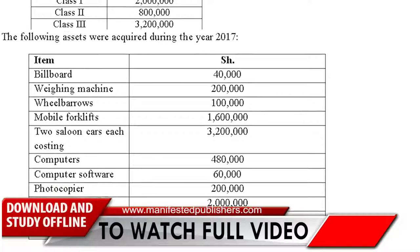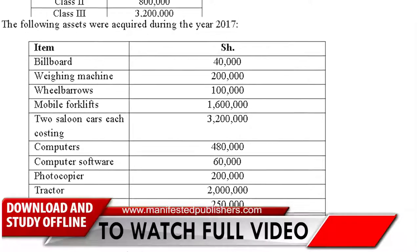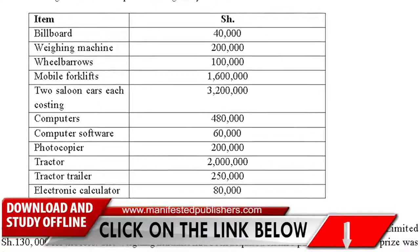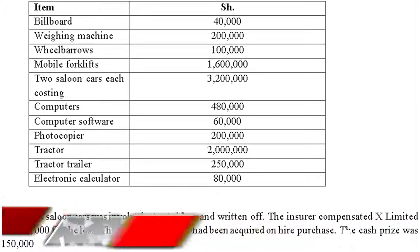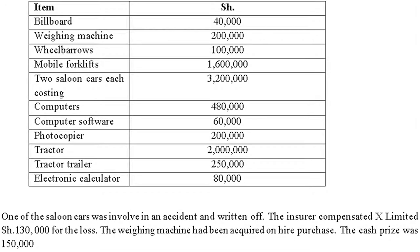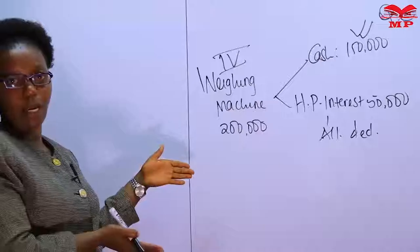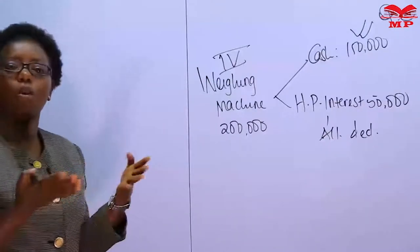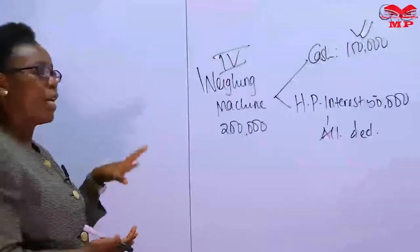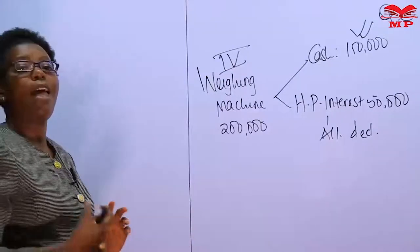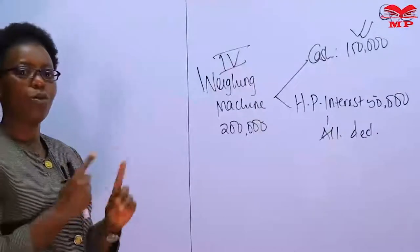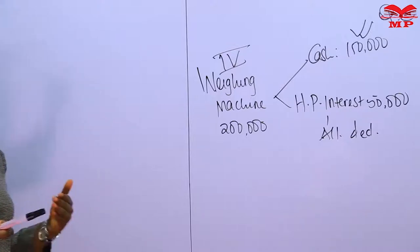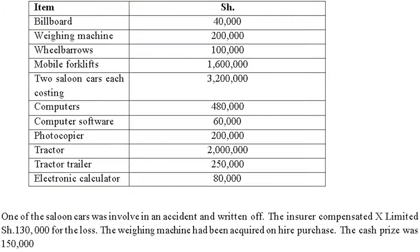Computers are office machinery and go to Class 2. Computer software is classified differently — it is granted at 20% on a straight-line basis. Because the wear and tear schedule uses a reducing balance basis and computer software uses straight-line, the two cannot be combined. Computer software will be treated separately at 20%, assuming the cost is written off over five years (100 divided by 20). We proceed with photocopier as office machinery going to Class 2.